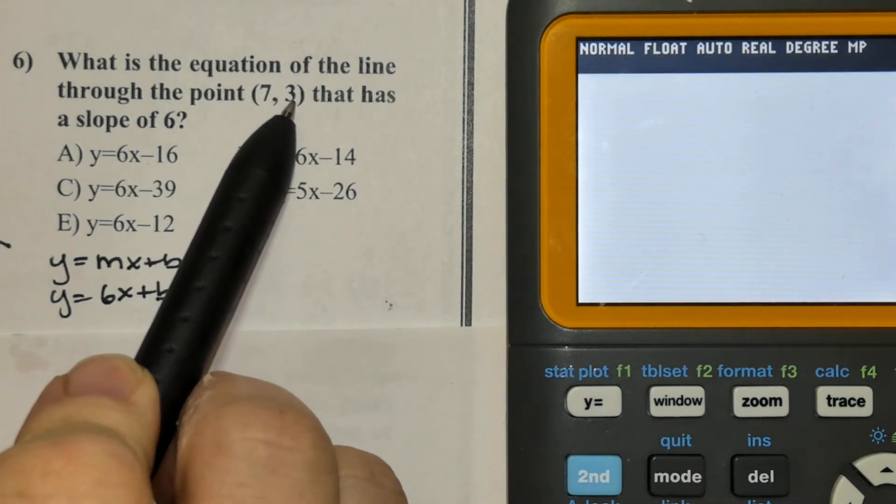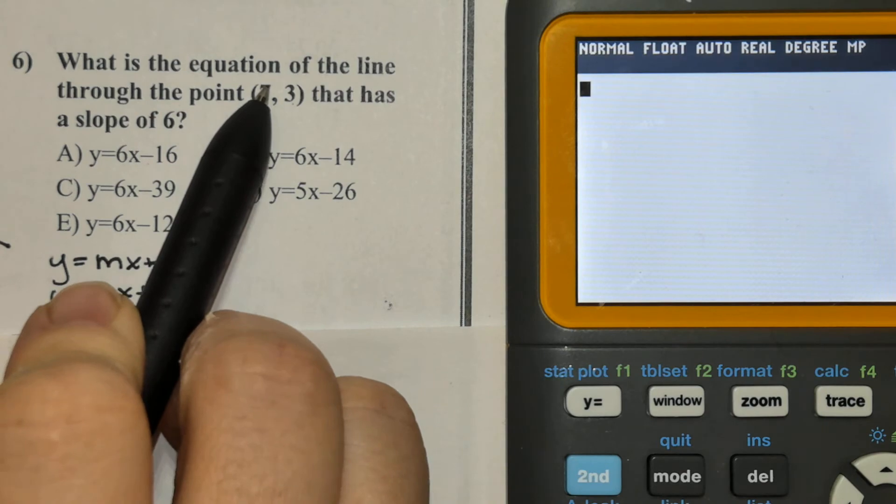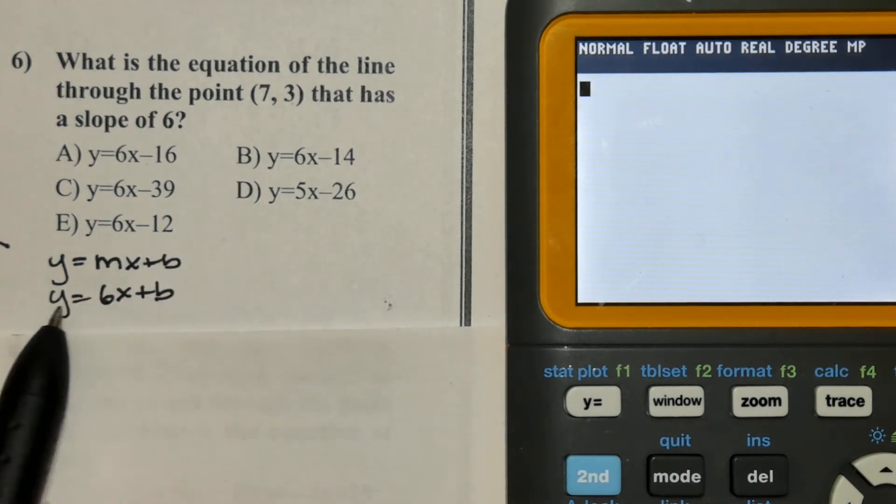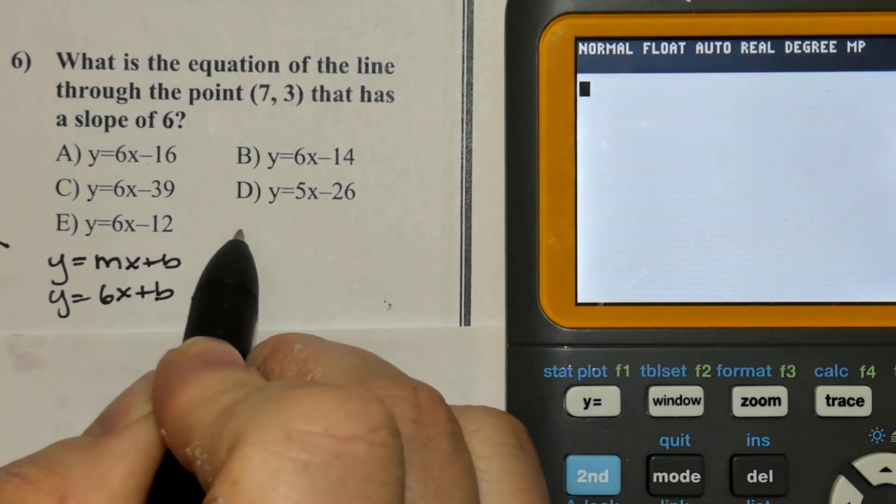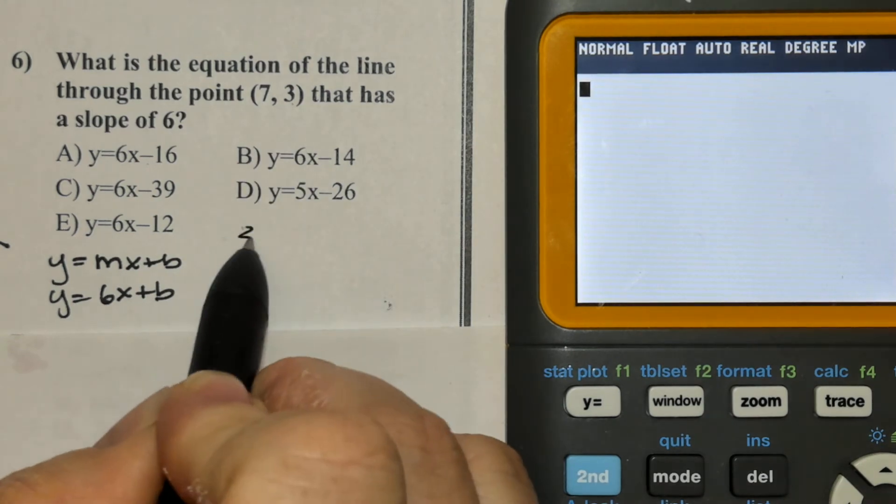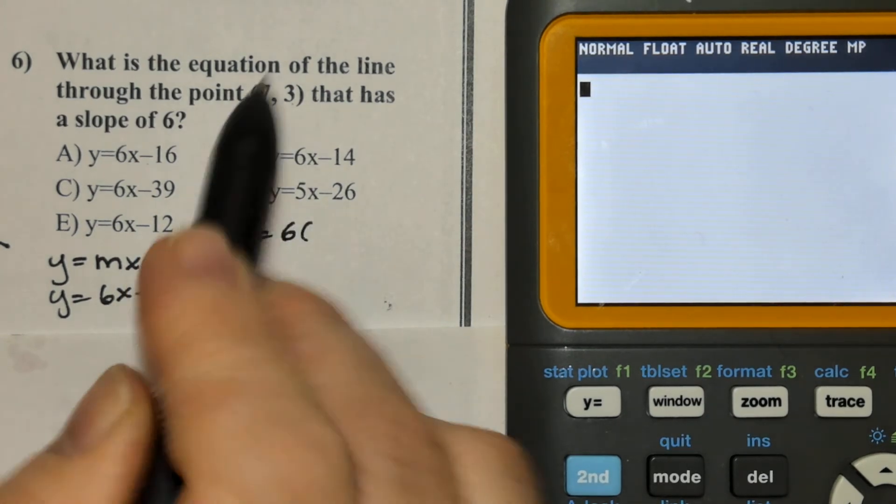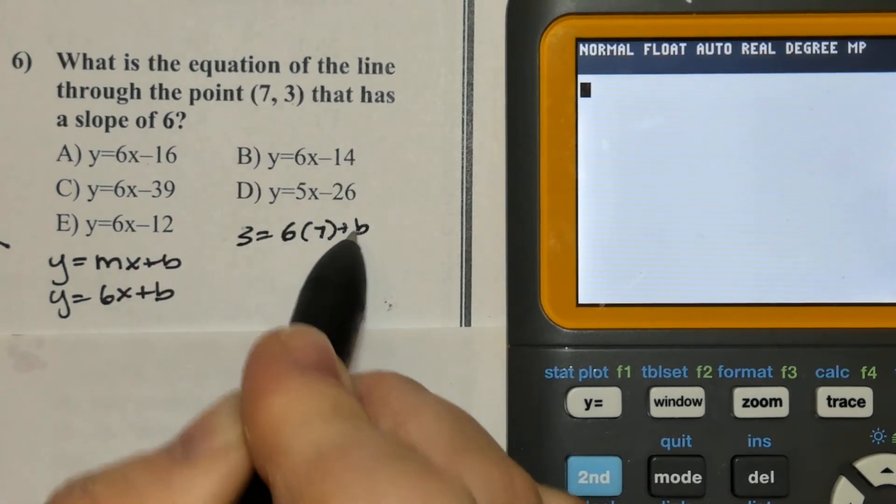The point they give you representing x and y will replace the x and the y in the equation. So my y is 3, the x is 7, and now I'm going to solve for b.